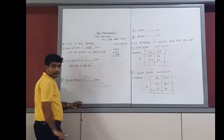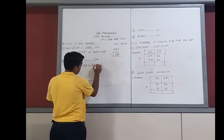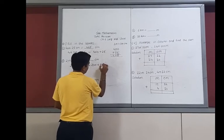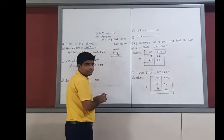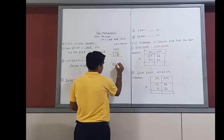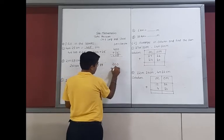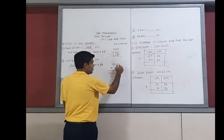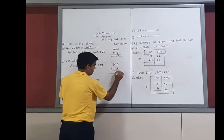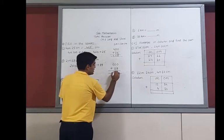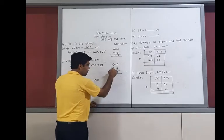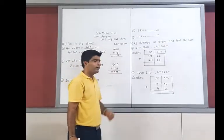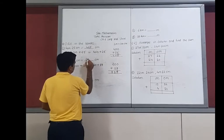2 multiplied by 100 gives 200, and we add 19. Simple addition: 0 plus 9 is 9, 0 plus 1 is 1, and 2 carries down. Your answer is 219 centimeters.